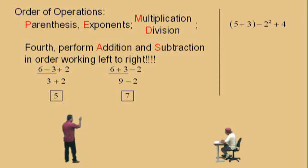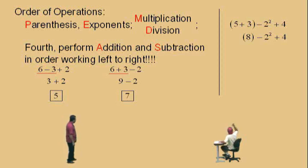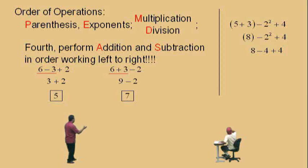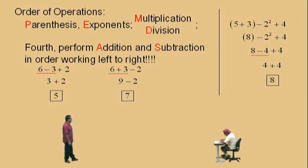Now step it up a bit. 5 plus 3 in parentheses, subtract 2 squared plus 4. Parentheses first — which is 8. Bring down our work. What's next? We've done our parentheses — do we have exponents? Yes. So we've got to do the 2 squared, which is 4. Bring down our work: 8 subtract 4 plus 4. Now addition and subtraction — which one comes first? Subtraction. So we do 8 subtract 4, which is 4, and 4 plus 4 is 8. Very nice.